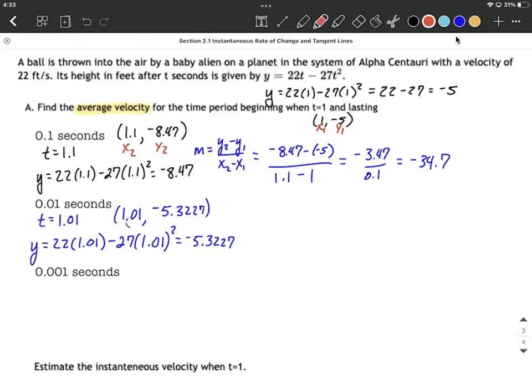What we have is we replaced the t with 1.01, and our output was negative 5.3227. So as an ordered pair, I'm going to treat this this time as our x2, y2, going back to the same x1, y1 for each one of these. This time our slope, our average rate of change, is going to be negative 5.3227 minus negative 5, so that will work out to be adding 5 over 1.01 minus 1. A little bit of simplifying down, we have negative 0.3227 over 0.01, which is negative 32.27.